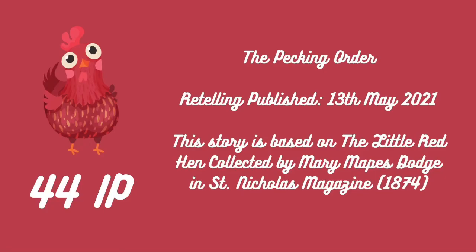Now on to the ranking. Number 10: the only story in this ranking with less than 50 interest points is The Pecking Order, released on the 13th of May 2021 and based on The Little Red Hen collected by Mary Mapes Dodge in St. Nicholas Magazine 1874. This is the shortest of my retellings so far and that might have an impact on why its interest is so low. I also think the thumbnail colour makes an impact — it's difficult to see the icon. In the meantime, give this story some love. It's one of my favourites, not just because it's low on the list. It has a strong plot and message and I really like the main character.